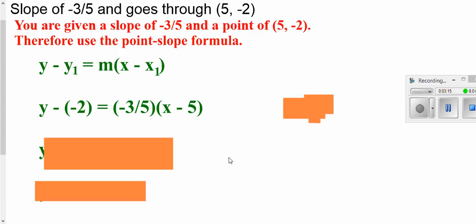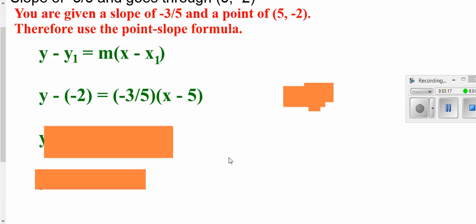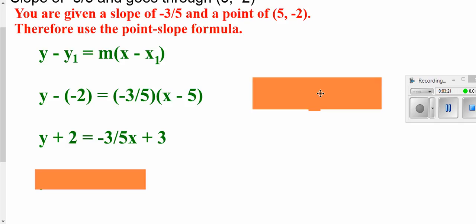All I'm going to do at this point is get y by itself. So I'm going to distribute through my negative 3 fifths. Now notice when you subtract a negative that's the same as adding. Distribute this through and I get a plus 3 here. Now to get y by itself I'm going to subtract 2 from both sides. And I end up getting this. This would be the equation of my line.